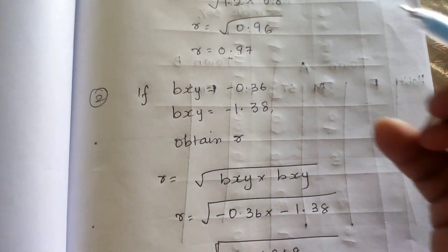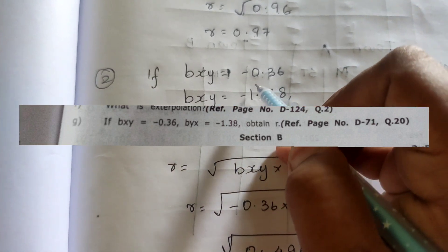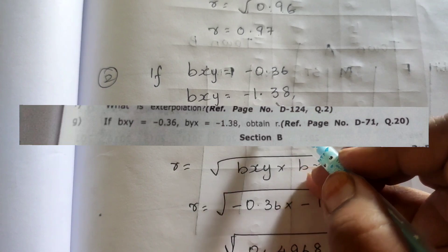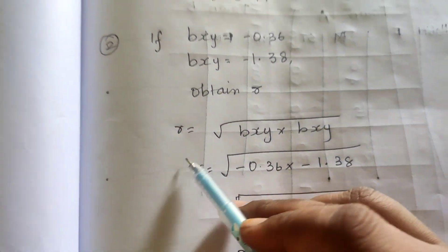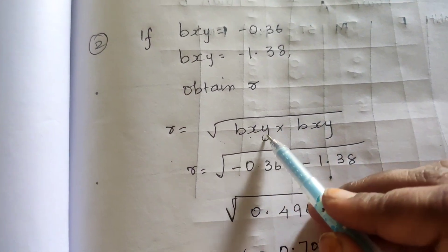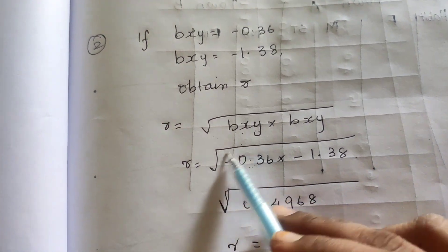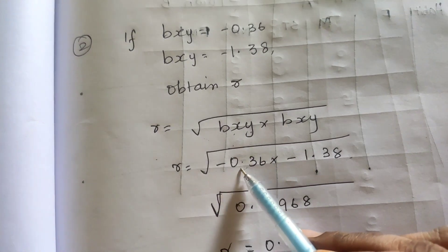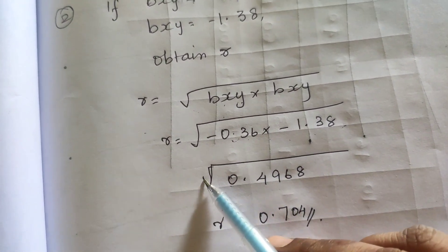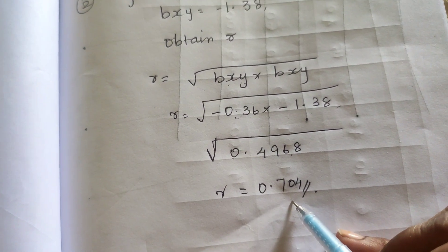Similarly, in the second model paper, again the question is asked. If bxy equals minus 0.36 and byx equals minus 1.38, obtain r. So r equals square root of bxy into byx. We take the values without taking the root first: minus 0.36 into minus 1.38, we get 0.4968. When we take the square root of this value, we get 0.704.